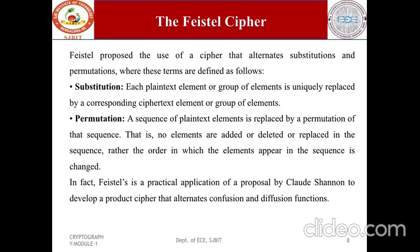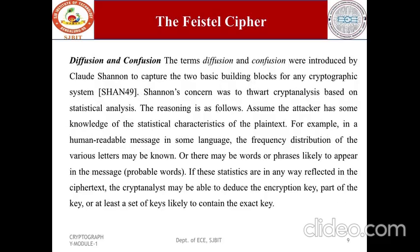The Feistel cipher is a practical application of a proposal by Claude Shannon to develop a product cipher that alternates confusion and diffusion functions. Notably, the Feistel cipher structure dates back over a quarter century and is based on Shannon's 1945 proposal. It remains the structure used by a number of significant symmetric block ciphers currently in use.